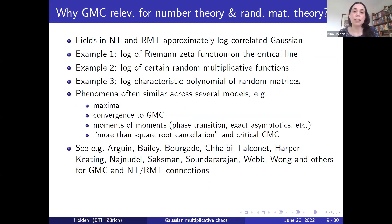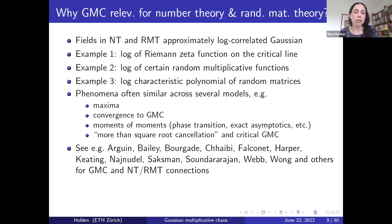I will now briefly summarize why Gaussian Multiplicative Chaos is relevant for number theory and random matrix theory. GMC is relevant because certain fields arising in these areas are approximately log-correlated Gaussian. For example, one can consider the logarithm of the Riemann zeta function on the critical line, the logarithm of certain random multiplicative functions, and the logarithm of the characteristic polynomial of certain random matrices. In each of these three examples, when certain parameters are sent to infinity, the field converges to some log-correlated Gaussian field.